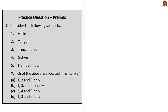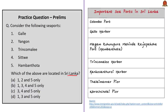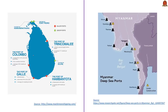Now look at this map-based question. Five ports are given and you need to identify which are located in Sri Lanka: Galle, Yangon, Trincomalee, Sittwe, Hambantota. Here, Galle, Trincomalee and Hambantota ports are located in Sri Lanka. So the correct answer is option D — 1, 3 and 5. The remaining two ports — Yangon and Sittwe — are located in Myanmar. Whenever you come across important ports in news, try to make a note of it from a geography perspective.